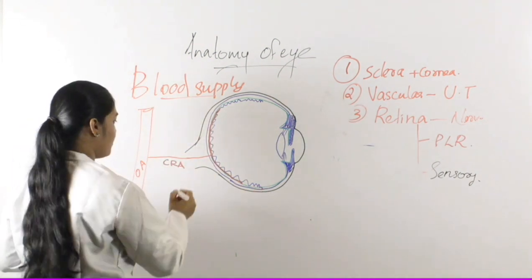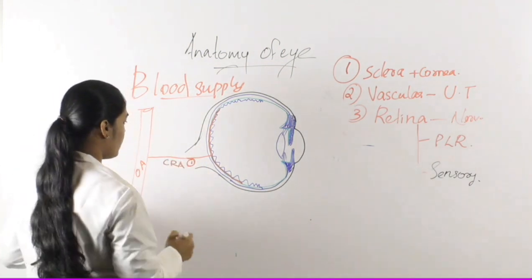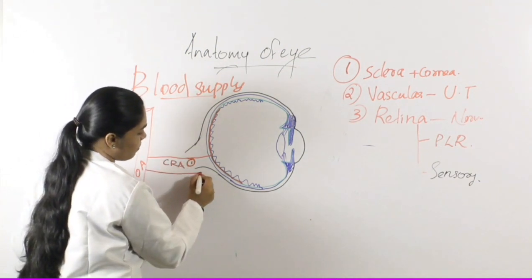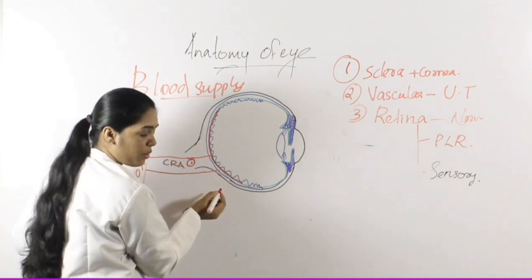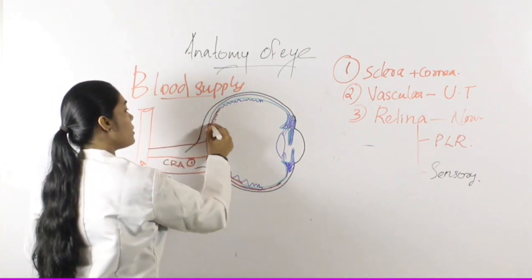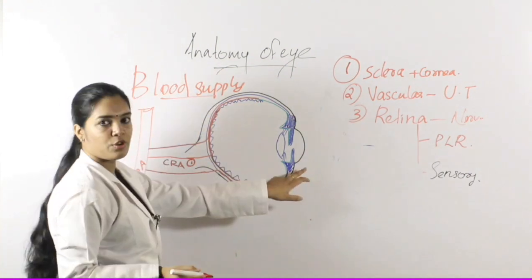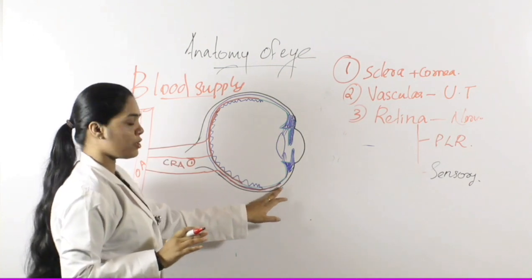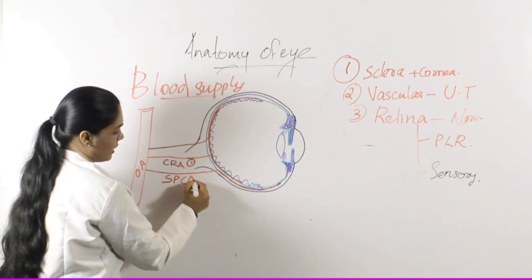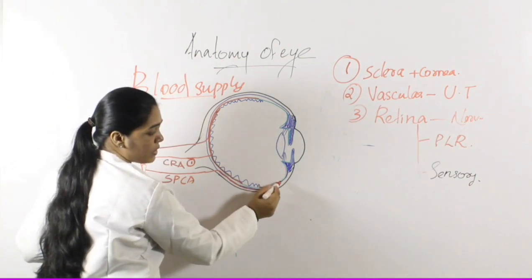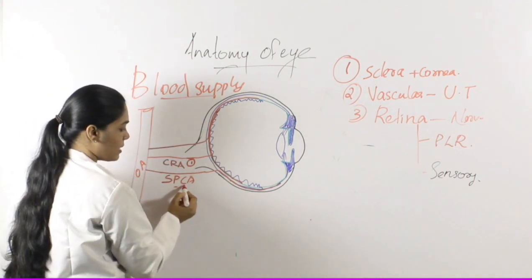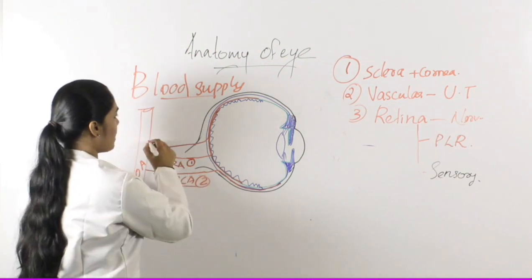The second branch does not enter the eye through the optic nerve — it enters outside the optic nerve, reaches the choroid, but does not extend up to the ciliary body or iris. It only supplies the choroid. Since it is short and enters from the posterior aspect, it is known as the short posterior ciliary artery.